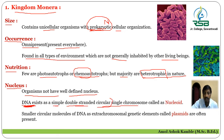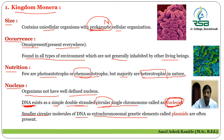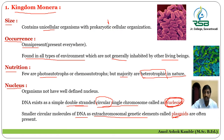This genetic material is called the nucleoid. The nucleoid type of nucleus or genetic material is present in the organisms of Kingdom Monera. Additionally, there are smaller circular molecules of DNA that show extra-chromosomal genetic elements, called plasmids. Plasmids play a significant role in transferring genetic material and are used in recombinant DNA technology for biotechnological applications.